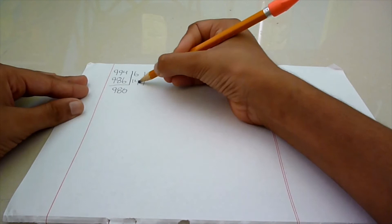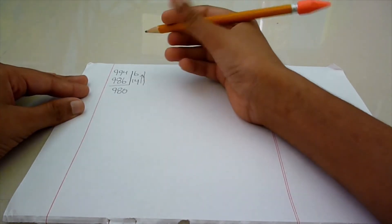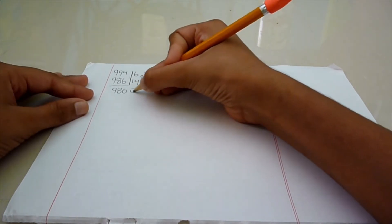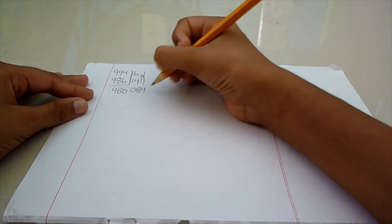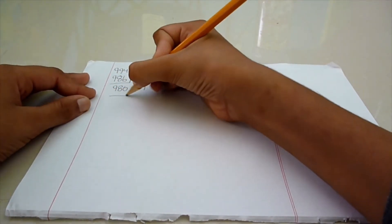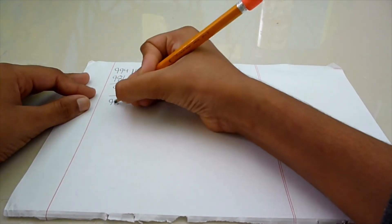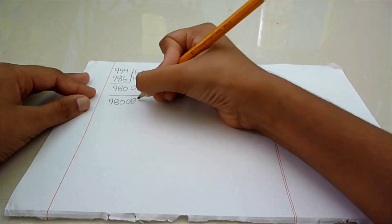Then, we have to multiply 14 times 6 in this manner, which we will get 084 since it's supposed to be a 3-digit number. So, now our answer for this question will be 980084.